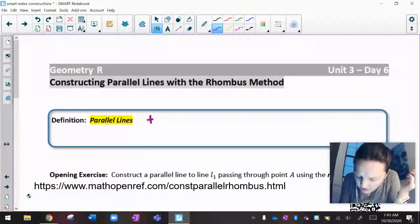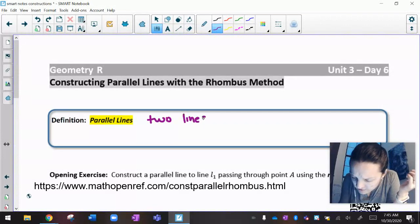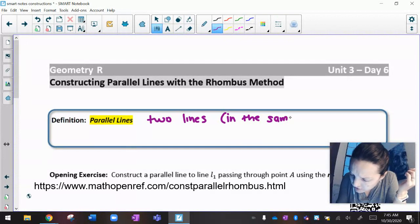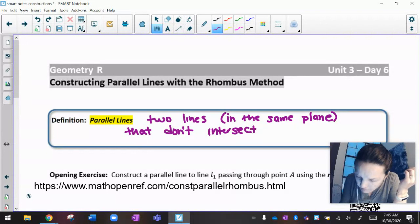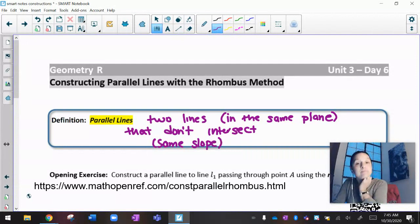Definition of parallel lines are going to be two lines in the same plane, which means really two lines that can be drawn on the same piece of paper that do not intersect. And if you remember from our first unit, that also means that they have the same slope.